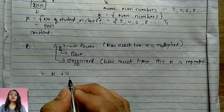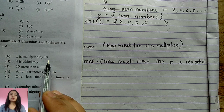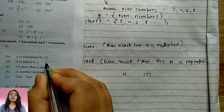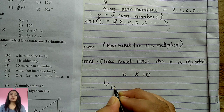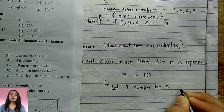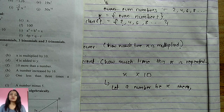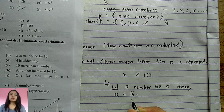'x is multiplied by 10' gives the expression 10x. 'A number increased by 16' — let the number be x; increased means addition, so the expression is x + 16.